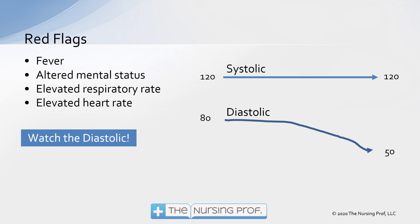Altered mental status is another red flag. As sepsis progresses, bacteria migrates throughout the body, inflammation occurs throughout the body, and the patient is developing shock — all of which can potentially cause a change in mental status. Elevated respiratory rate is also a sign. The first organ system affected is the lung because it has a very high surface area — all those alveoli with tiny blood vessels. Lots of blood flow means lots of inflammatory debris collecting there, causing problems with gas exchange.